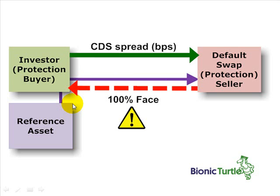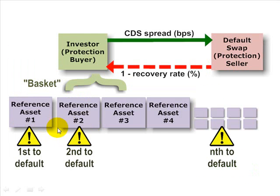The basket credit default swap is much the same. What we change is the reference asset. Under the plain vanilla CDS, the reference is either an entity — a corporation or sovereign — or a single instrument like a bond. We change from a single reference asset to a basket of reference assets. As before, the protection buyer pays an insurance premium regularly to the swap seller in exchange for a promise of recovery protection in the event of a triggering event.